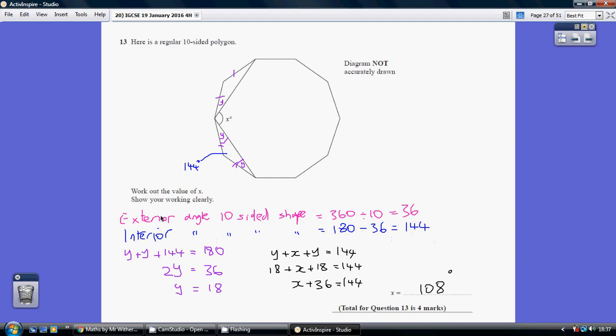Remember, an interior angle plus an exterior angle equals 180. So, we know this angle here, for example, is 144, the interior angles of the 10-sided polygon, decagon, it would be called.